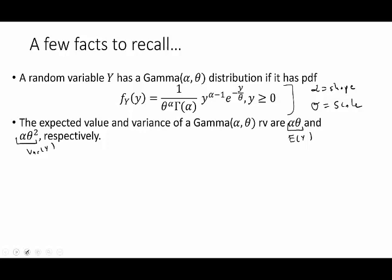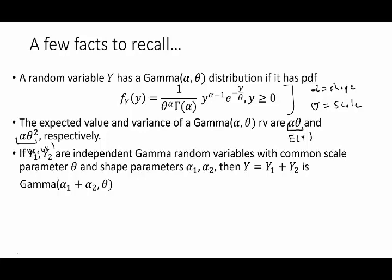Third: if y1 and y2 are independent gamma random variables with a common scale parameter but two possibly different shape parameters, then y equals y1 plus y2 also results in a gamma distribution, and its shape parameter will be the sum of the previous two shape parameters. This is a fact one could prove using moment generating functions, or using the 2D transform methods we'll introduce later in video two.